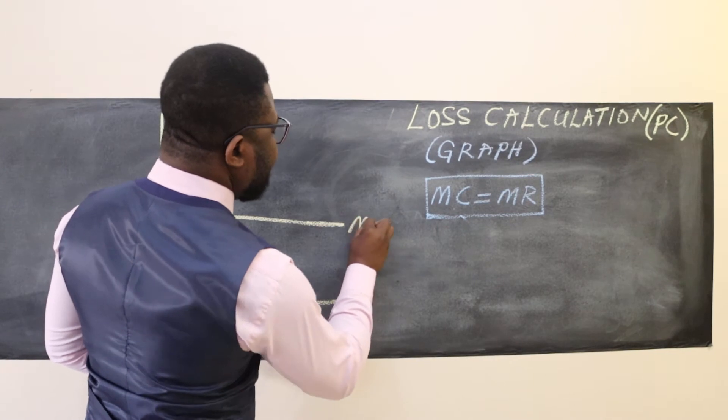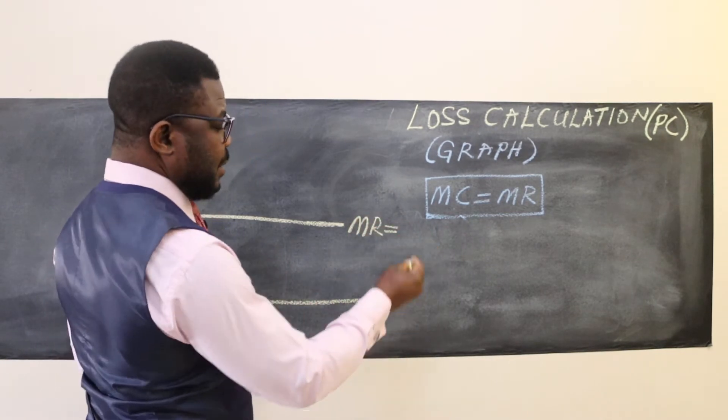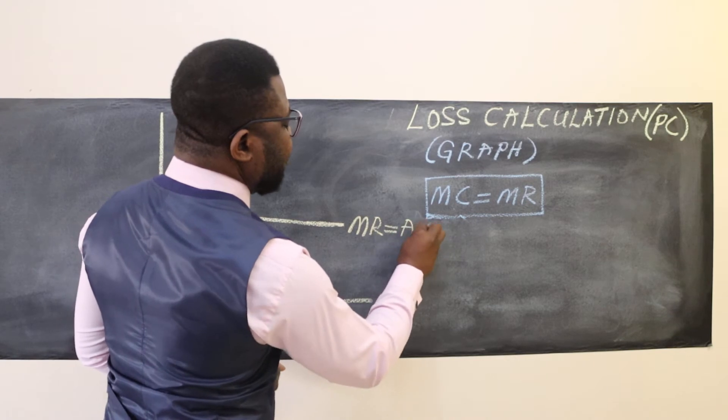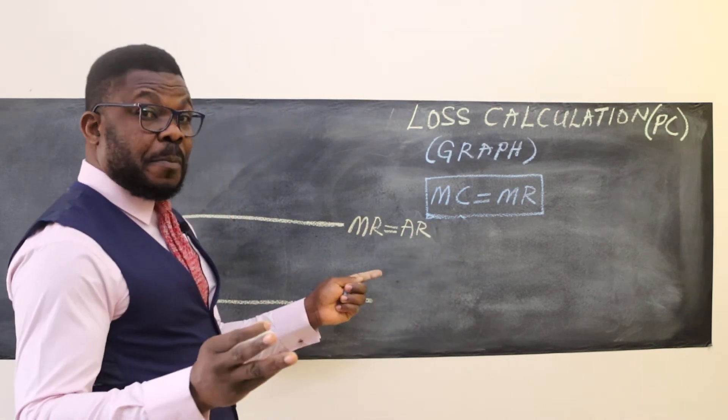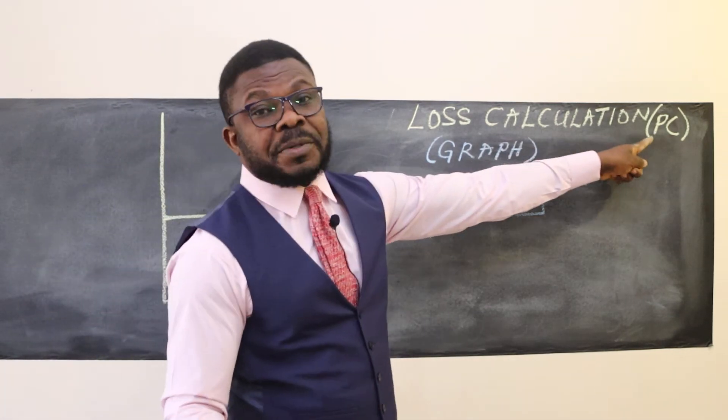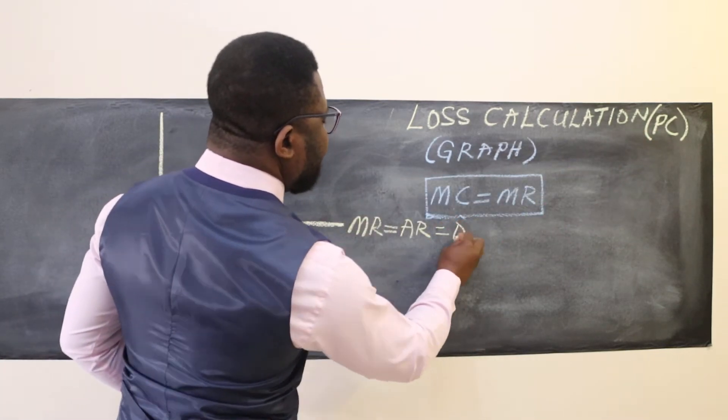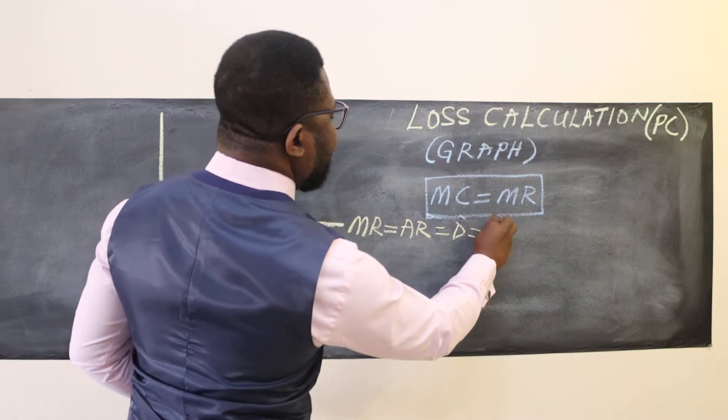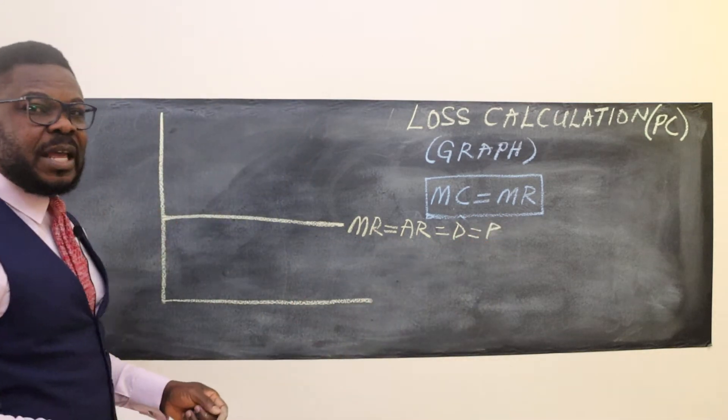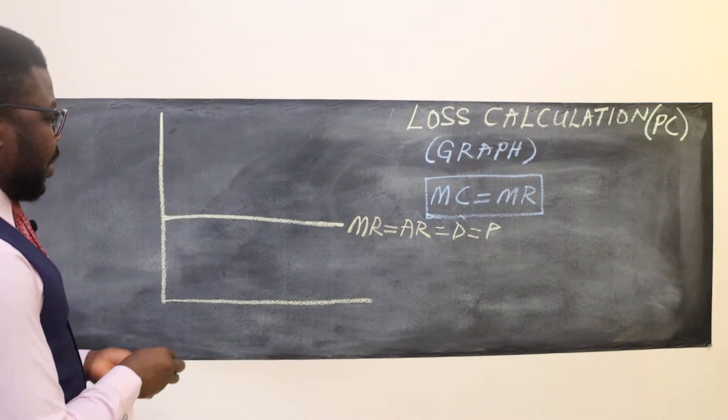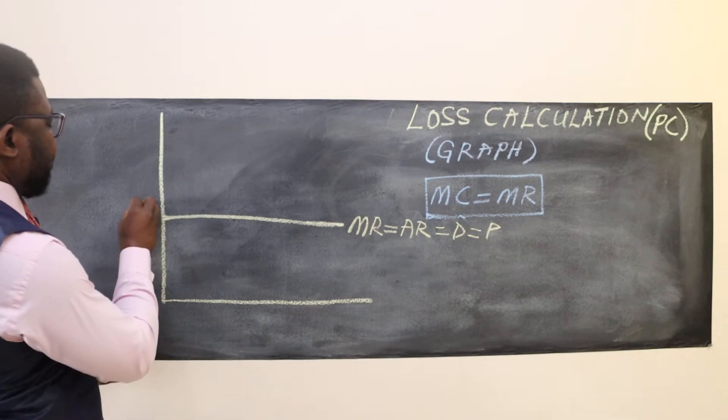We have the marginal revenue line (MR), which is the same as average revenue for perfect competition. This is also the same as the demand curve and the price. We know all these variables are the same for a perfect competitor. For analysis purposes, let's say this value here is six. But we don't know the quantity or average total cost yet.